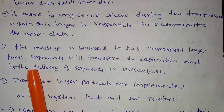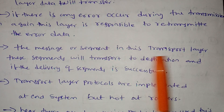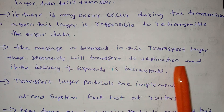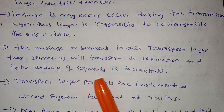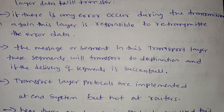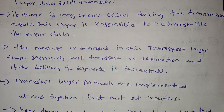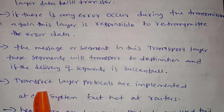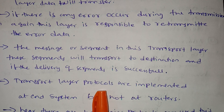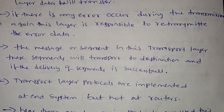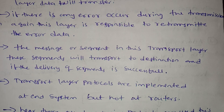The segments in the transport layer are transported to the destination, and if the delivery of segments is successful, it confirms delivery. Transport layer protocols are implemented at end systems but not at routers.